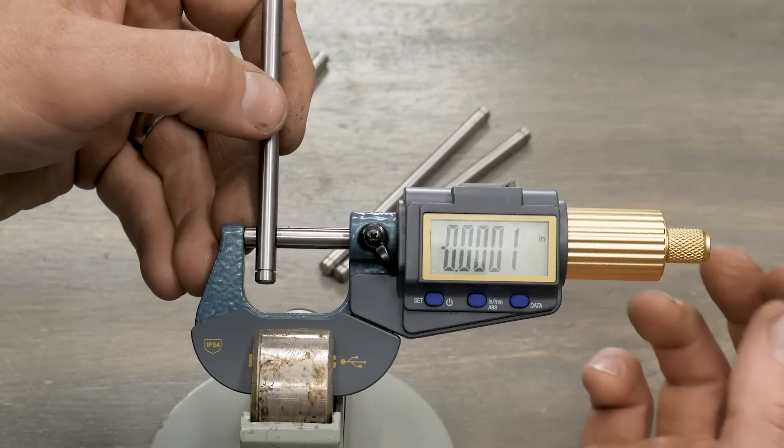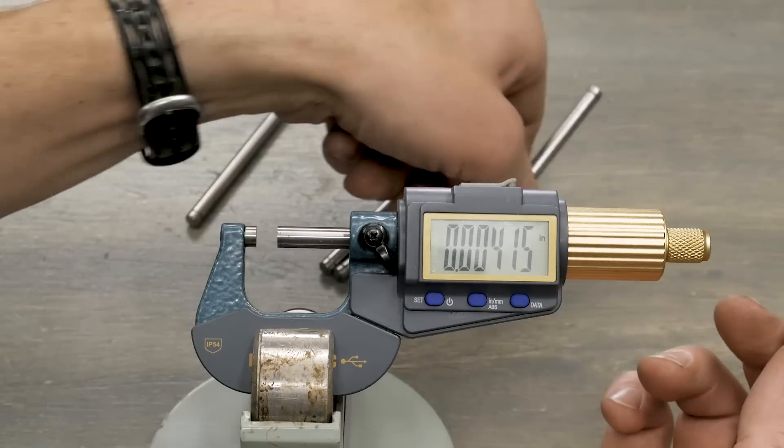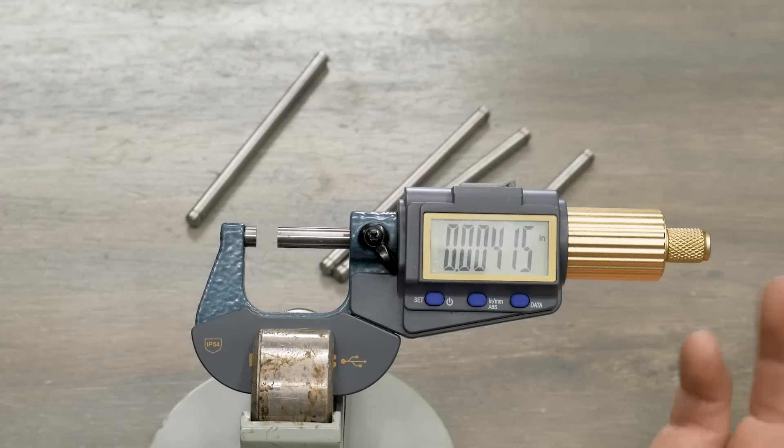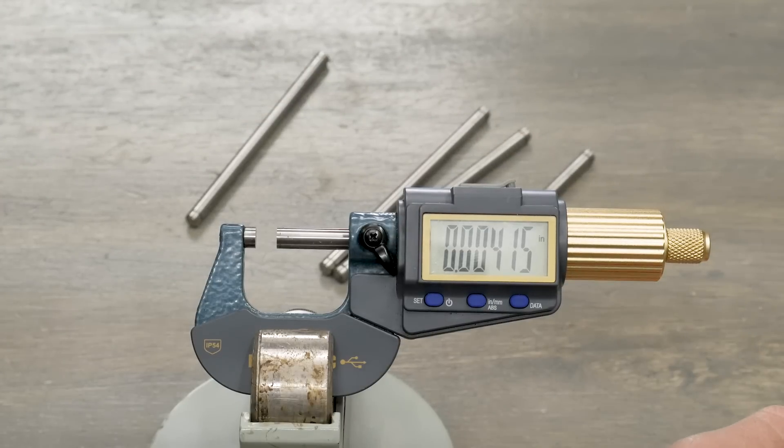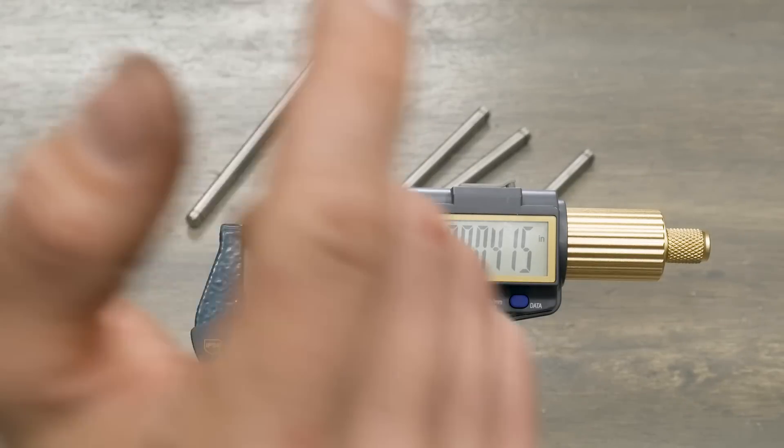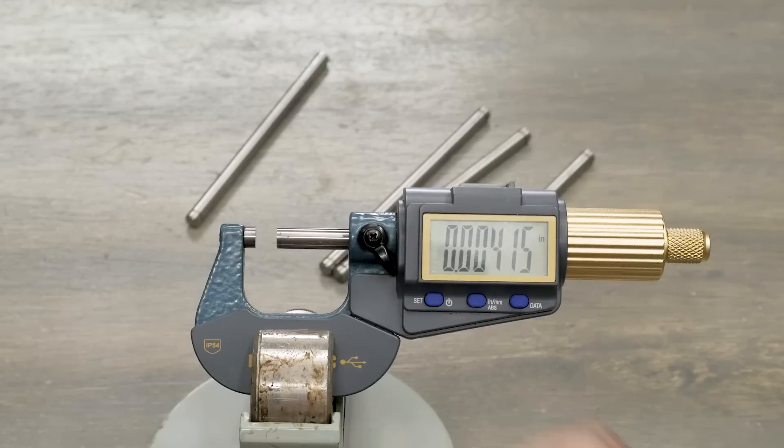and then for the fourth rod, we're at minus a tenth. So, we can see we're varying by about plus or minus a tenth or so across these rods, which is great. Now, what if we wanted to log the data to our tablet or our phone or our PC so that we can analyze the data? Well, that's easy. I'll show you that next.